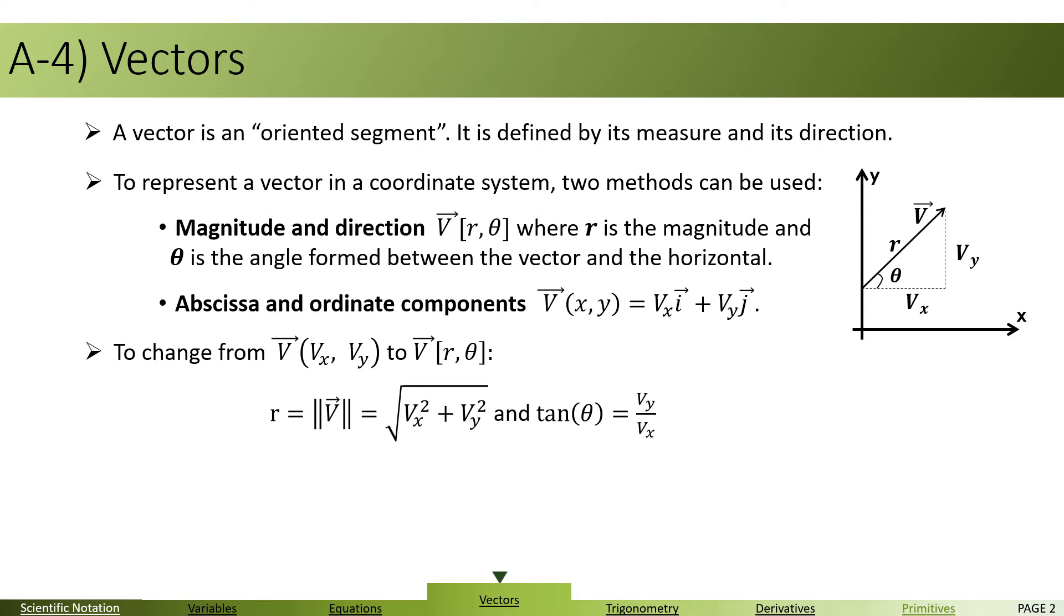To change V(x, y), or the Cartesian form, into what's known as the polar form, we can use R equals square root of Vx squared plus Vy squared, and tangent theta equals Vy over Vx.